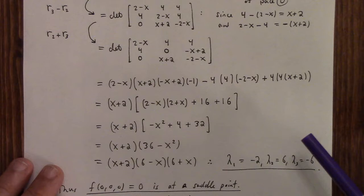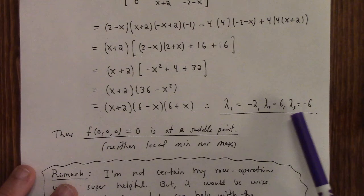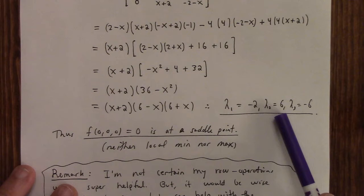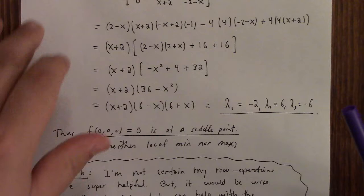Great, anyway, after some calculation I figured out that the eigenvalues are -2, 6, and -6, which shows you have both negative and positive eigenvalues, which means that the origin is in fact a saddle point.